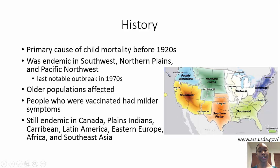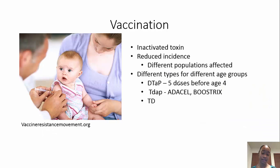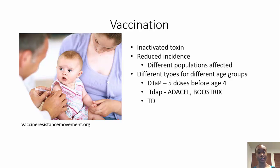The disease is still endemic in other parts of the world, like Canada, the Caribbean, Latin America, Africa, and Southeast Asia. The reason diphtheria isn't prevalent in the United States anymore is because of vaccinations, which have reduced the incidence of the disease dramatically.